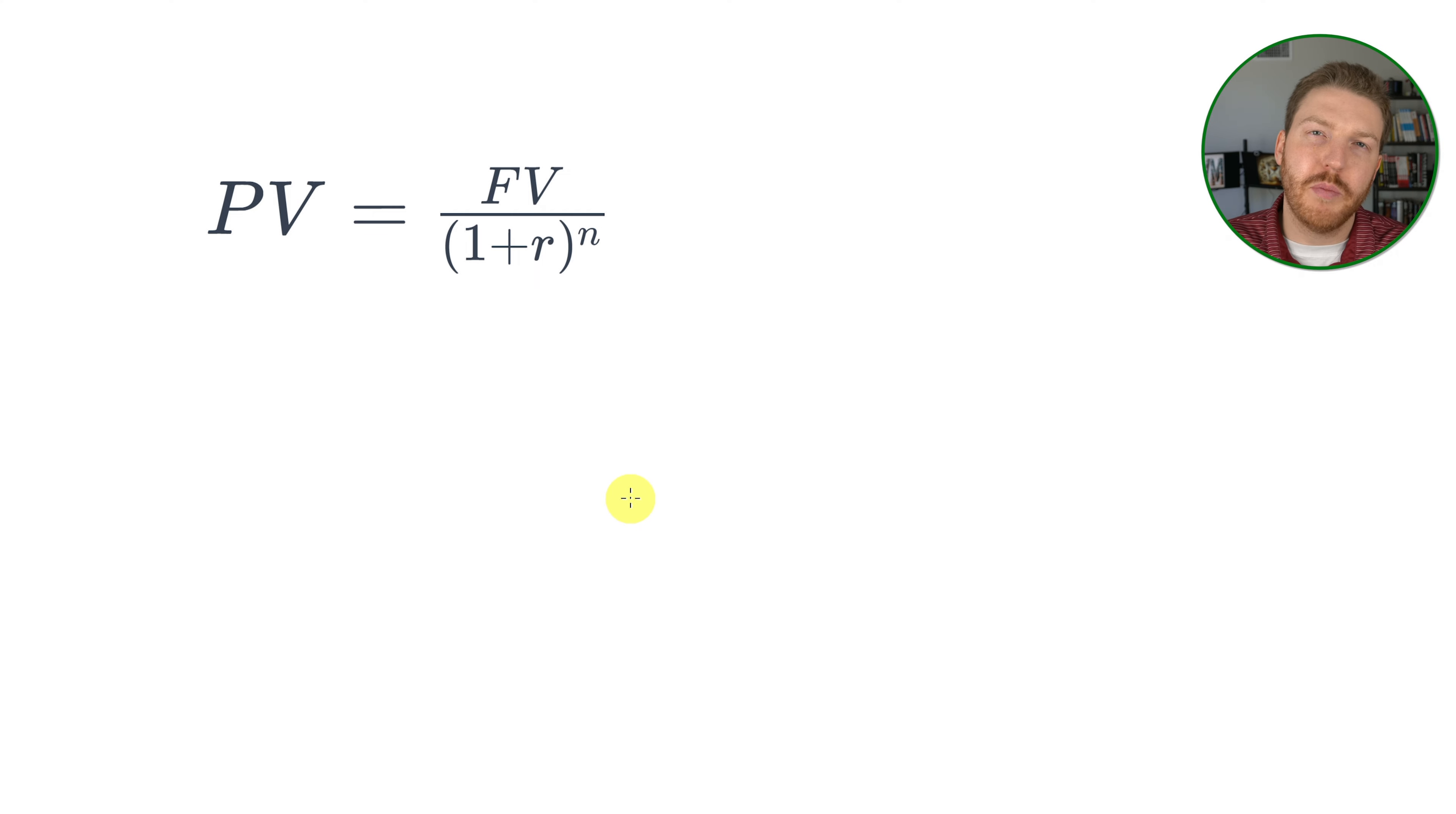We could state the same formula in a different way and start with future value and work back to our present value. So here we're going to see that our present value PV is going to be equal to our future value of $106